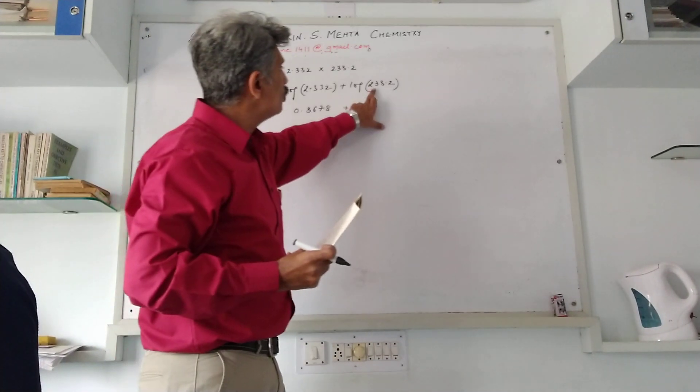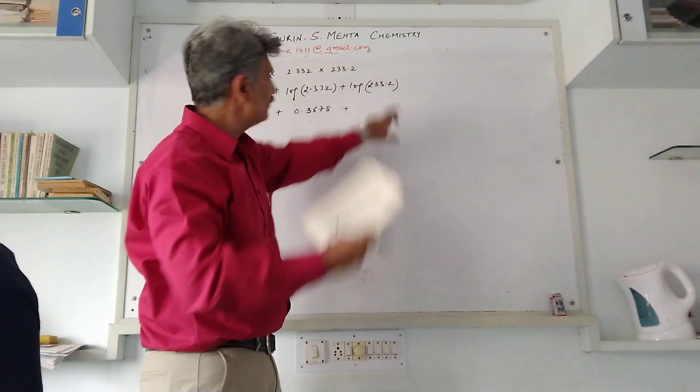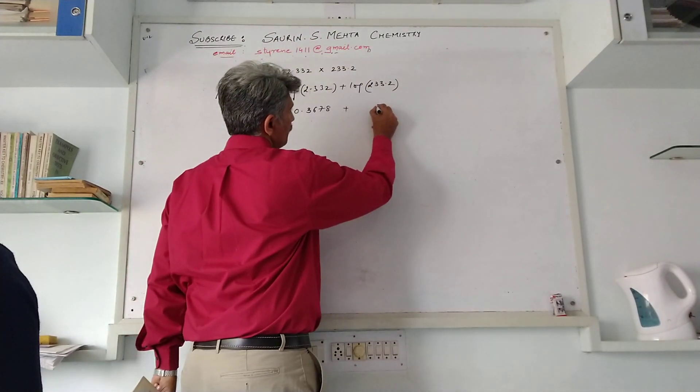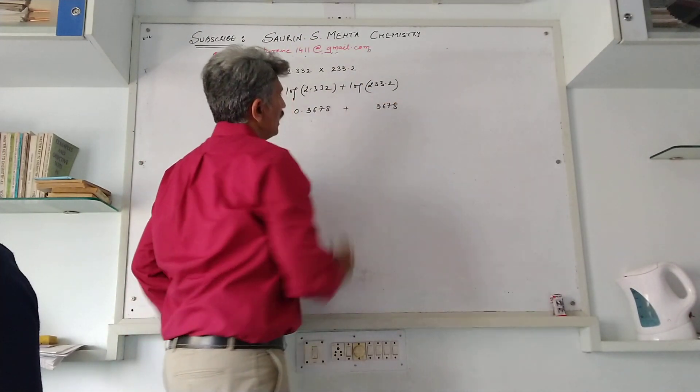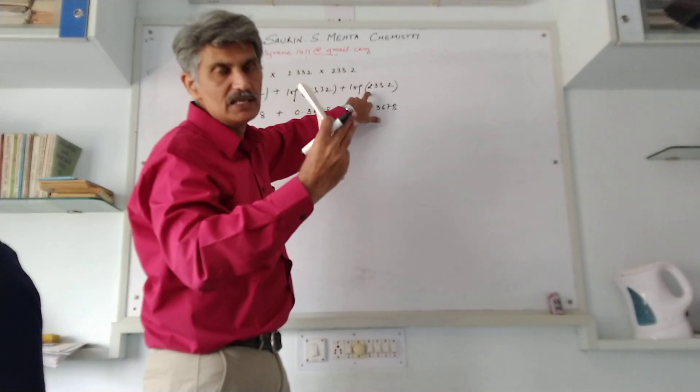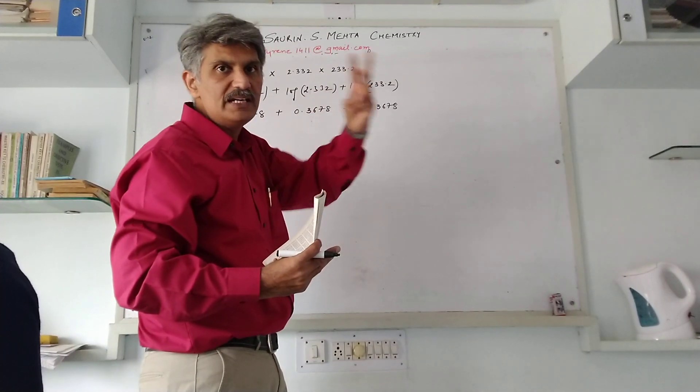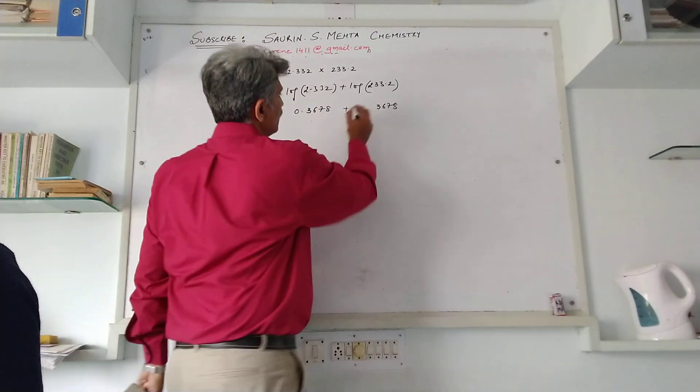Again we have 233.2. From the same, the value comes to 3678. Now how many digits are there before the decimal? Three digits minus one is two, so place 2 over here.